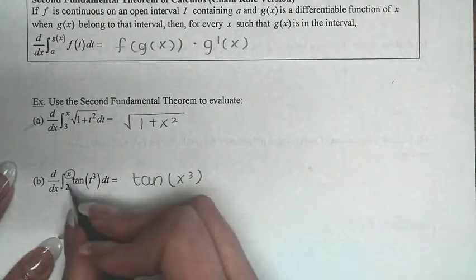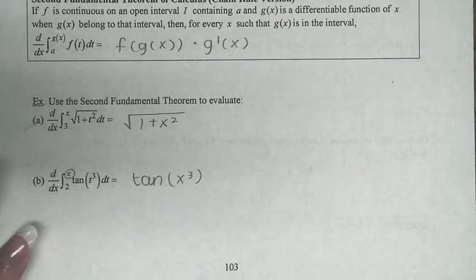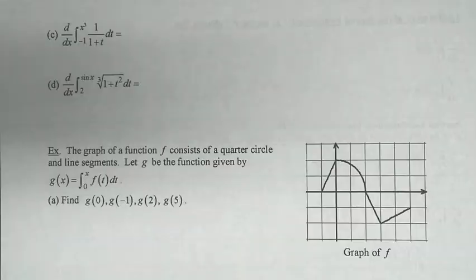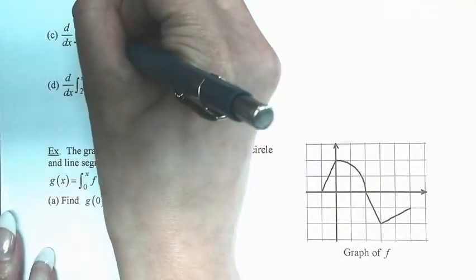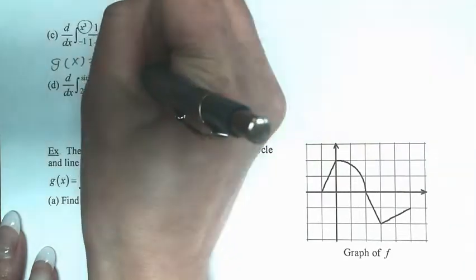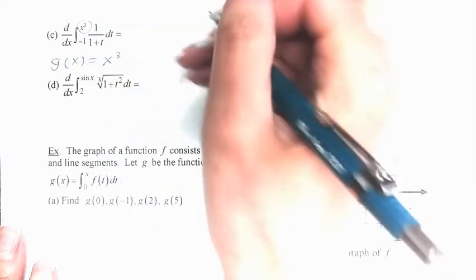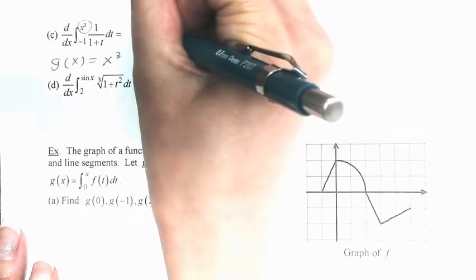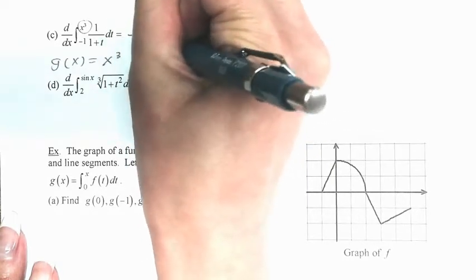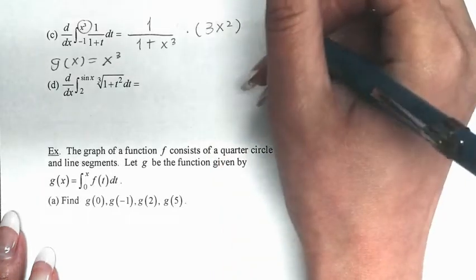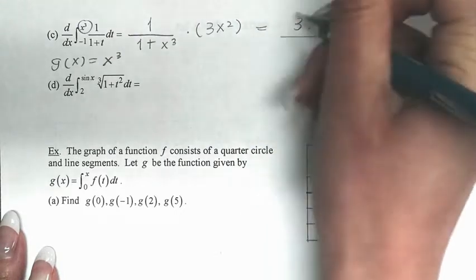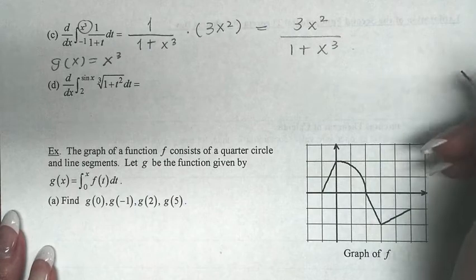If you want to see the chain rule explicitly for part (b), g(x) = x, so g′(x) = 1, and you'd multiply by 1 — which changes nothing. For the next problem, we have d/dx of the integral from −1 to x³ of 1/(1 + t) dt. Here g(x) = x³, so we apply the chain rule version: the answer is 1/(1 + x³) times 3x², which we can write as 3x²/(1 + x³).